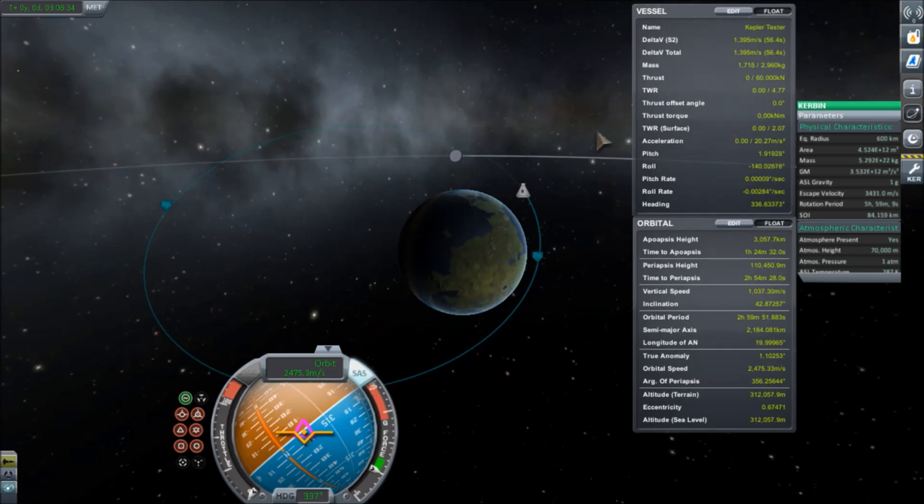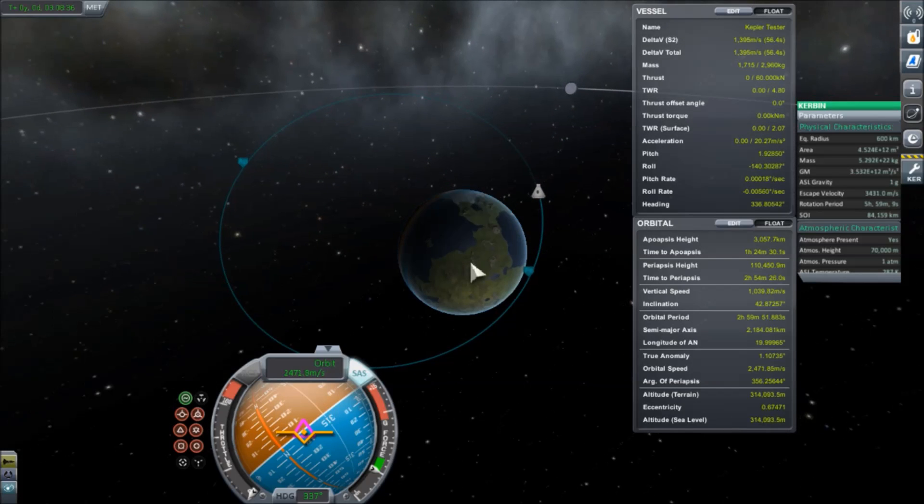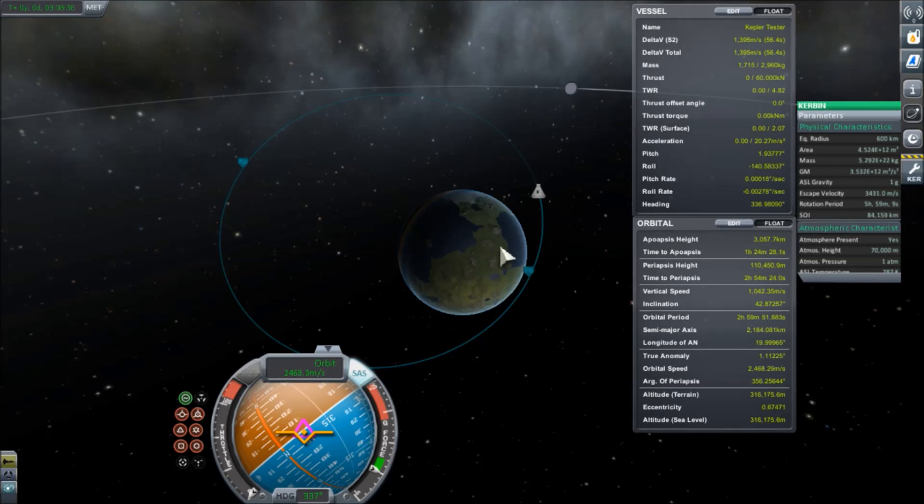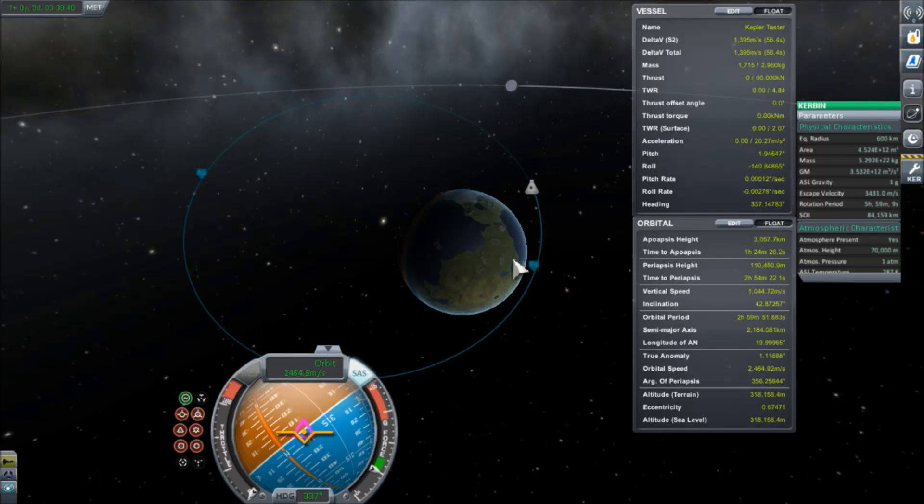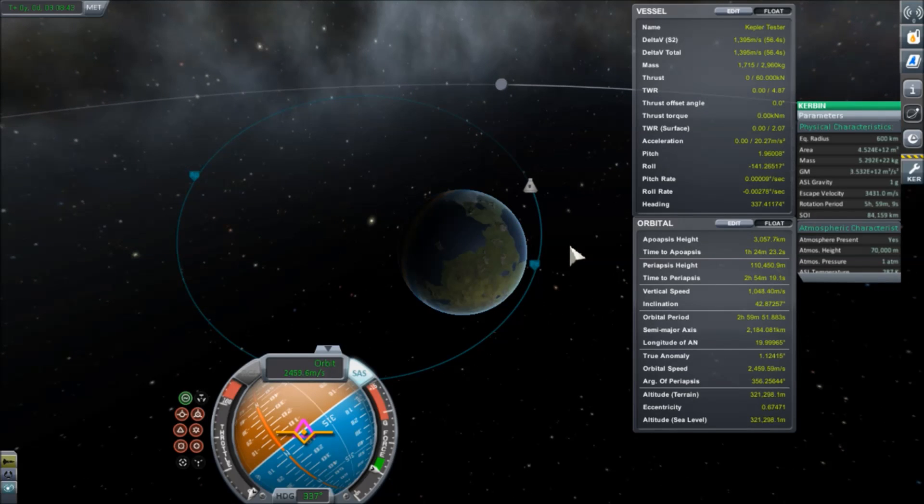focus Kerbin, we pull up the Kerbin parameters information, and we see that the equatorial radius is 600 kilometers. So these equations basically measure from the center of the body, basically assuming a point mass. Obviously that's not true. We have a pretty big planet in the way here. But as a first-order approximation, these equations are really useful.